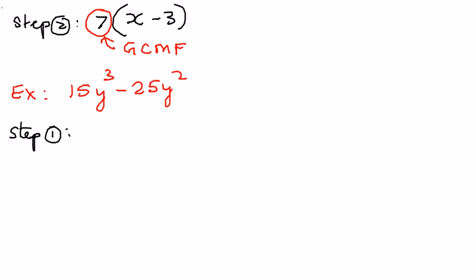First of all, we want to see if there's anything common between the coefficient terms and if there's anything common between the variable terms. Now, 15 and 25, 5 is common.